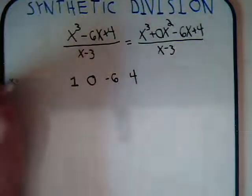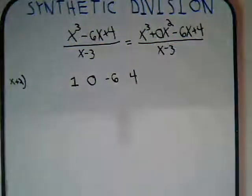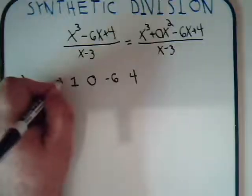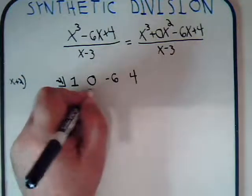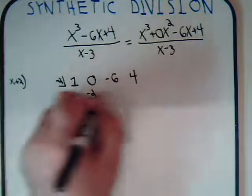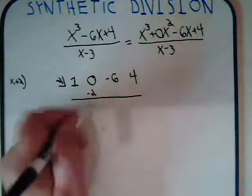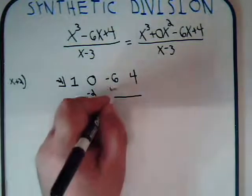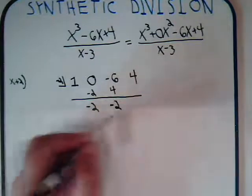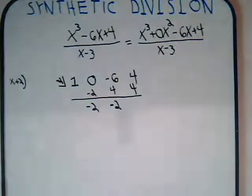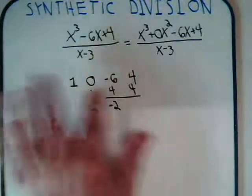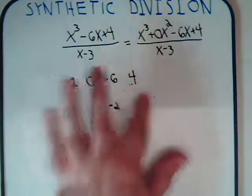What about x plus 2? We take negative 2 and run the division: 1 times negative 2 is minus 2; 0 plus minus 2 is minus 2; minus 2 times minus 2 is plus 4; minus 6 plus 4 is minus 2; minus 2 times minus 2 is plus 4; 4 plus 4 is 8. That is not zero, so x plus 2 is not a factor.